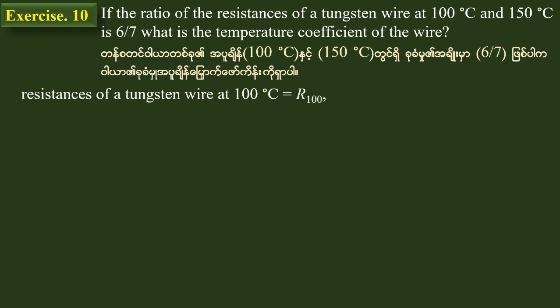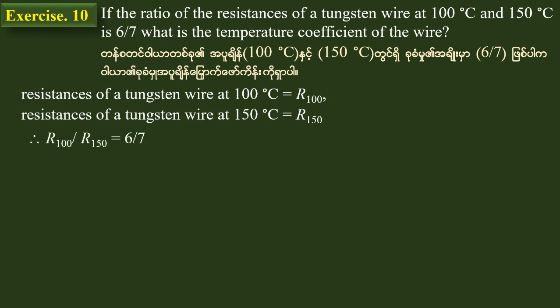The resistance of a wire at 150 degrees Celsius is equal to R100. The resistance of a testing wire at 150 degrees Celsius is equal to R150.